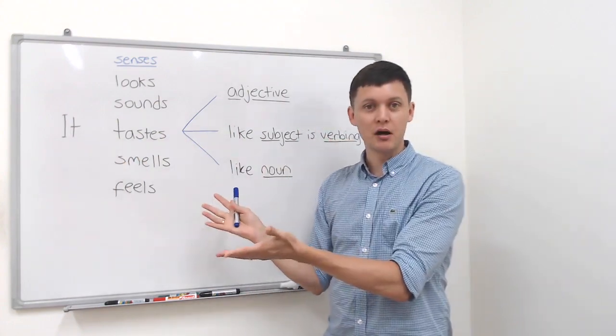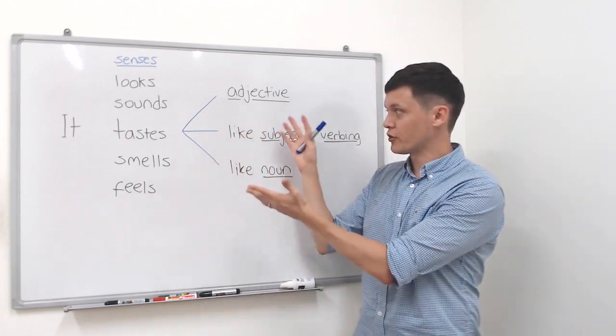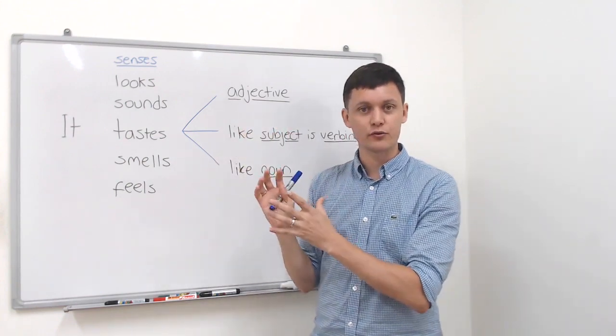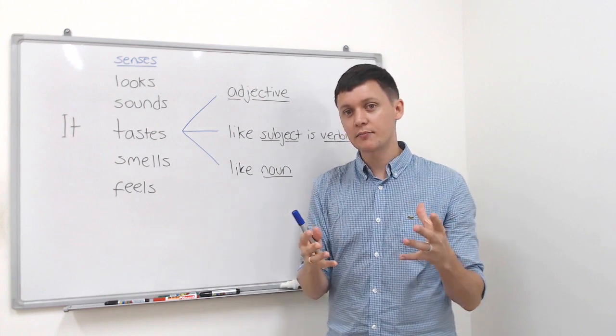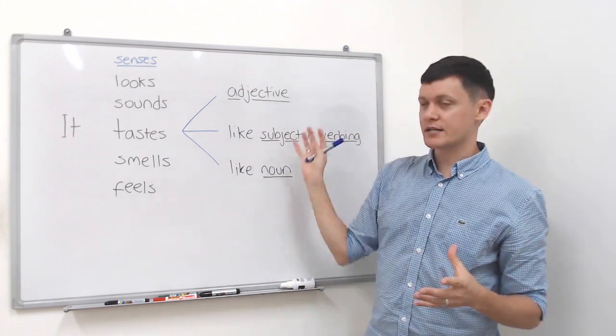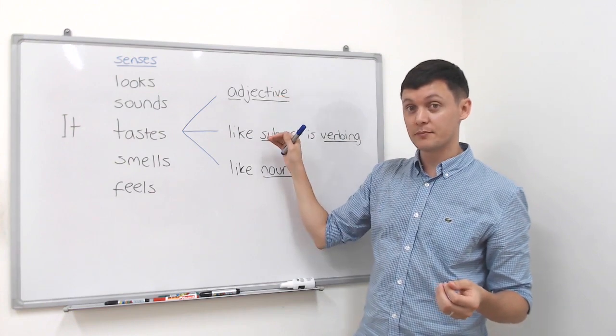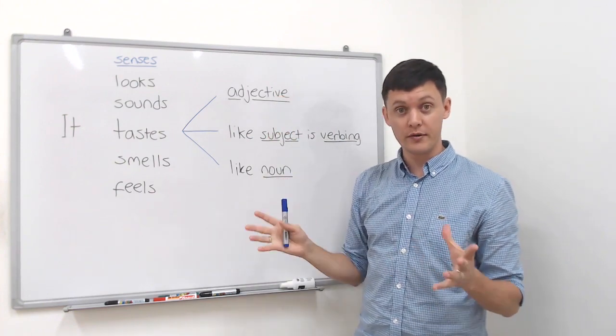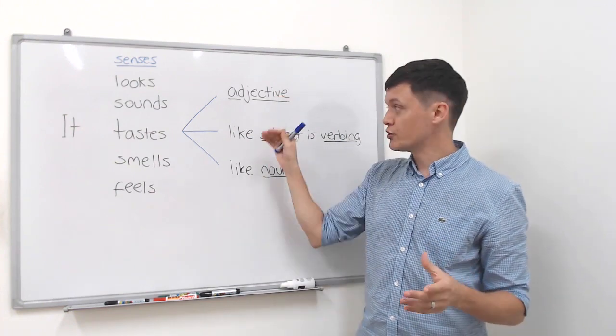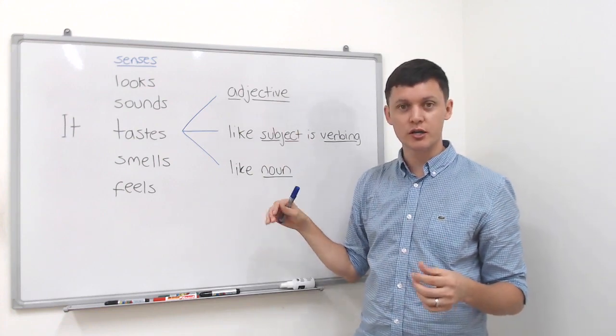So that's the easy part of this structure and then we move on to the right side where things get a little tricky. But to summarize, with this structure we can use it with adjectives, verbs or nouns. All of them are fine but you have to use a different structure for each.